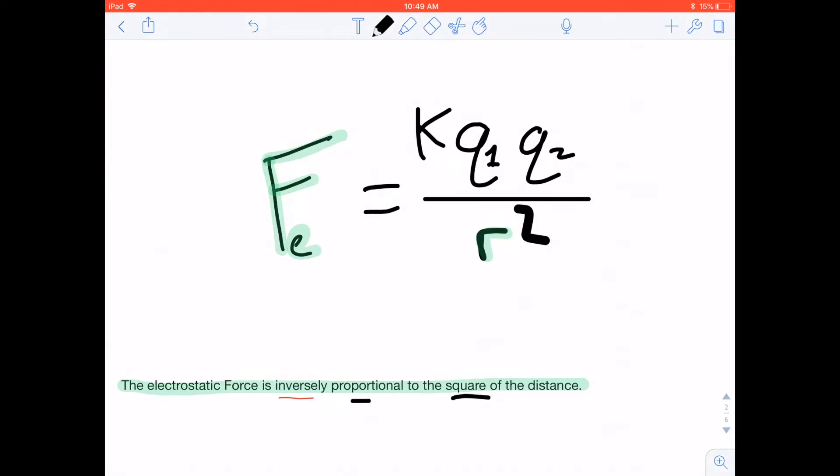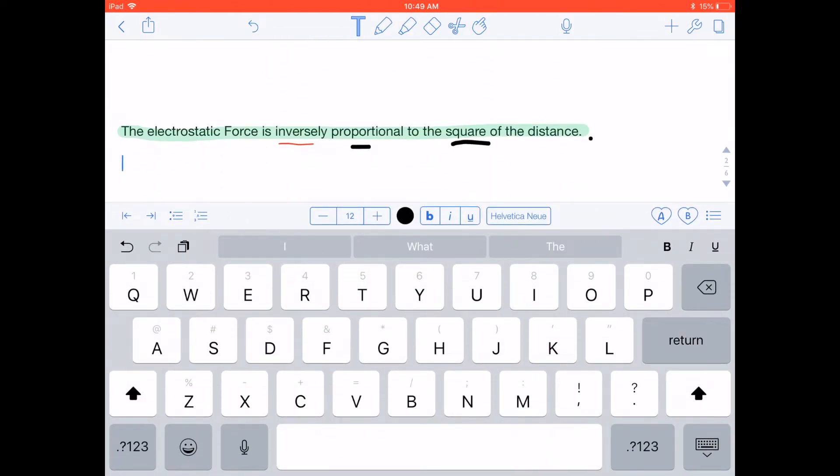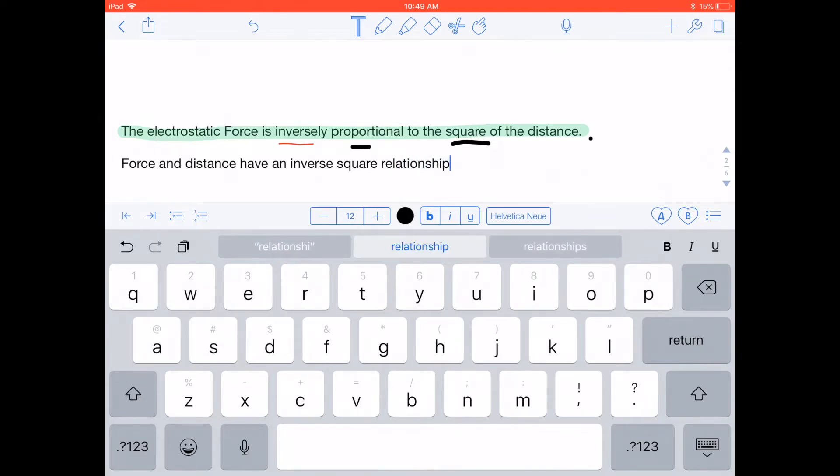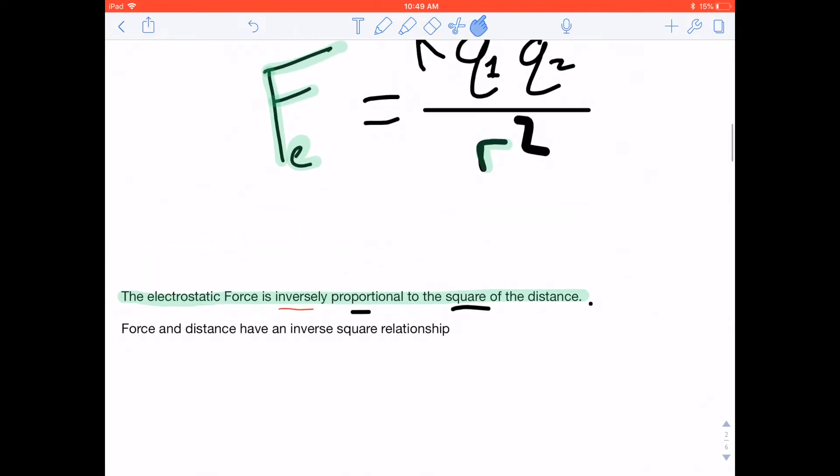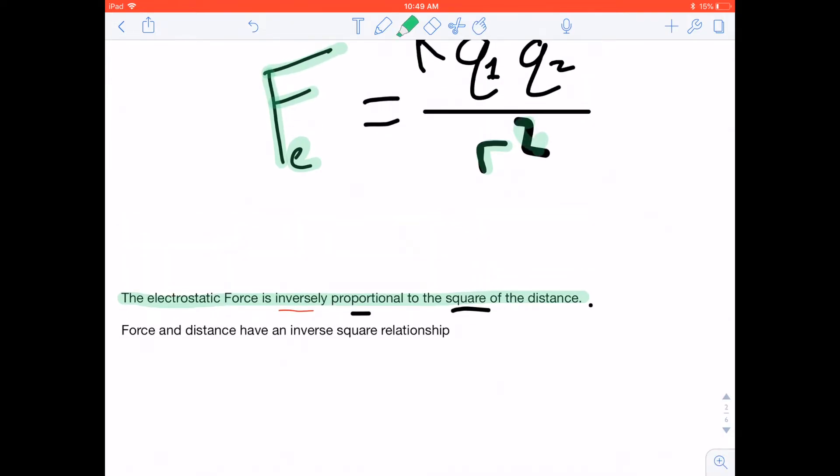Another way to say it, and I'll actually type it because this is kind of an important language piece, is you can say that force and distance have an inverse square relationship. So, what is an inverse square relationship? What does that square actually do to the data?